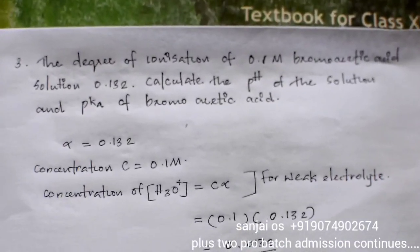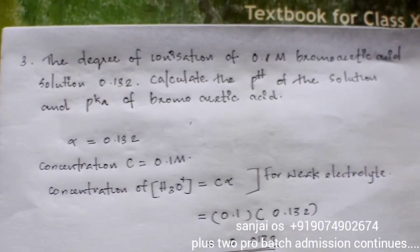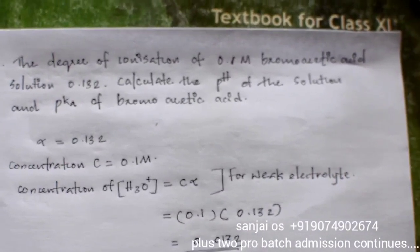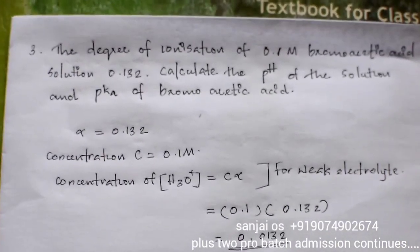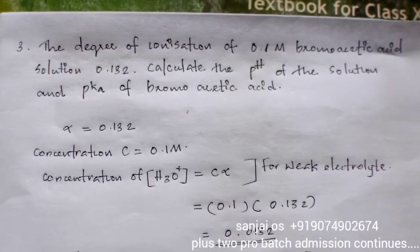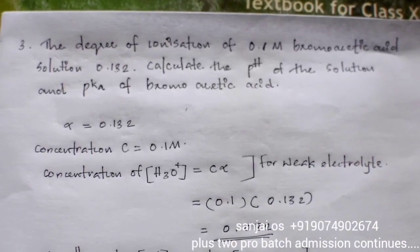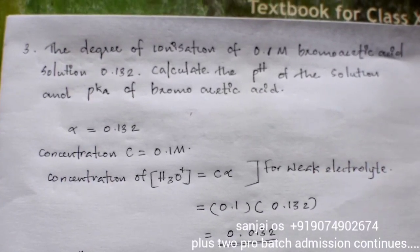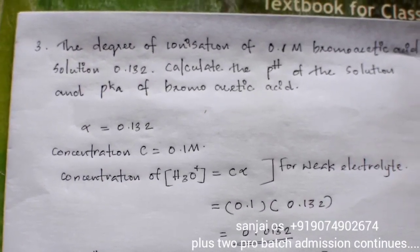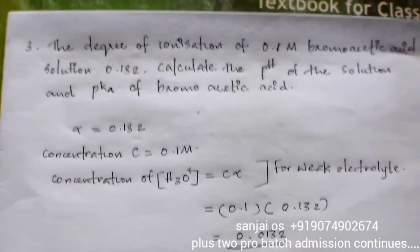The degree of ionization of 0.1 molar bromoacetic acid solution is 0.132. Calculate the pH of the solution and pKa of bromoacetic acid.